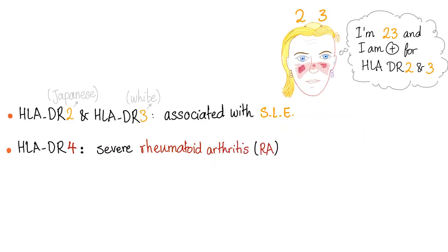Now for today's topic: HLA-DR2 and DR3. DR2 and DR3 are associated with SLE. The mnemonic is: 'I'm 23, I'm positive for HLA-DR2 and 3' — representing a 23-year-old female in her child-bearing age, the typical lupus patient. HLA-DR2 is more common in the Japanese population; HLA-DR3 is more common in the white population.